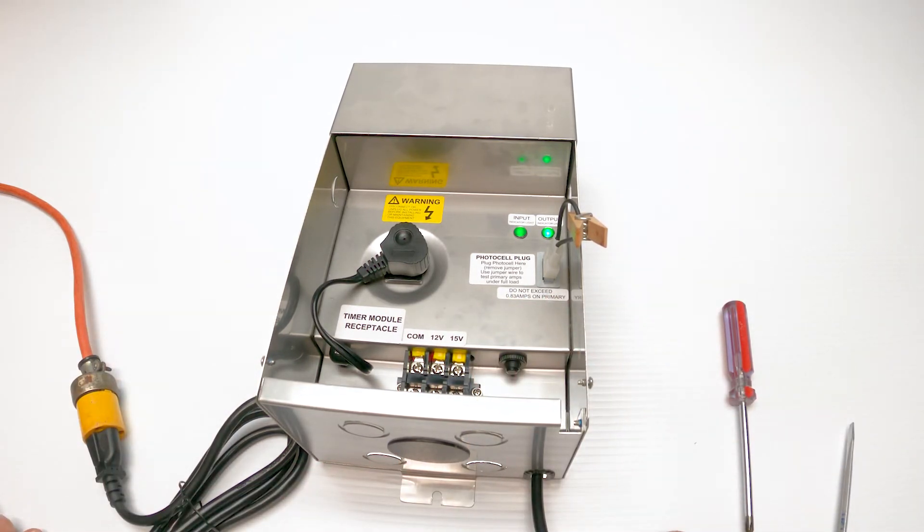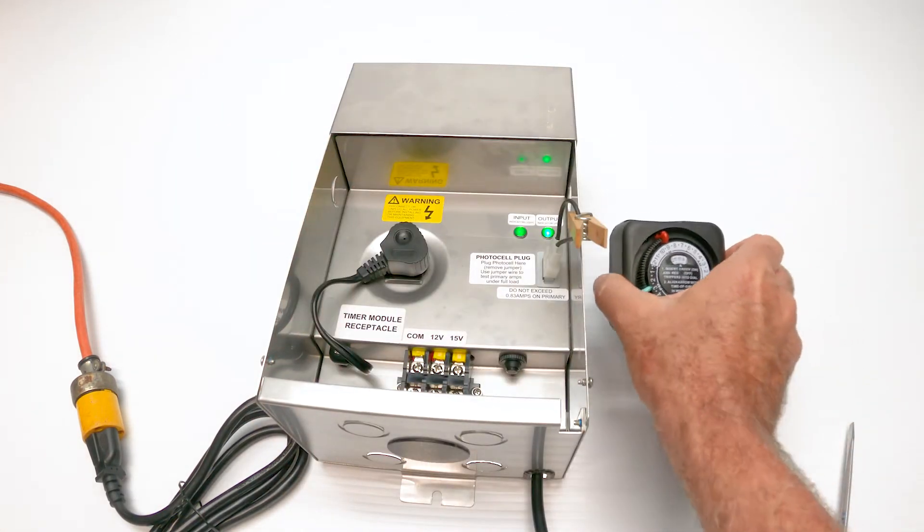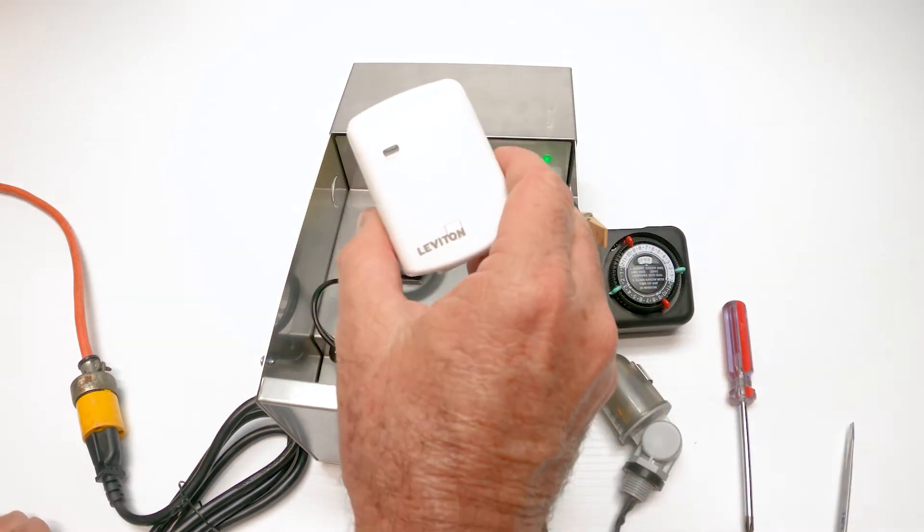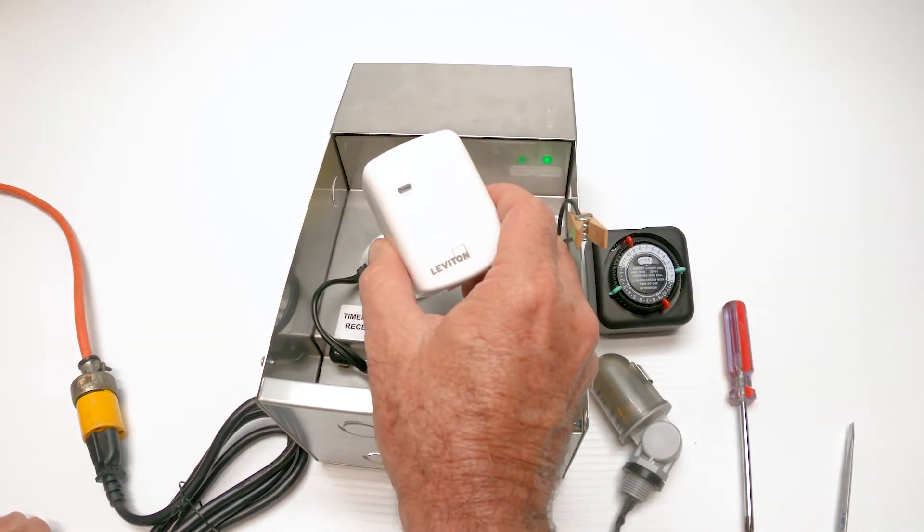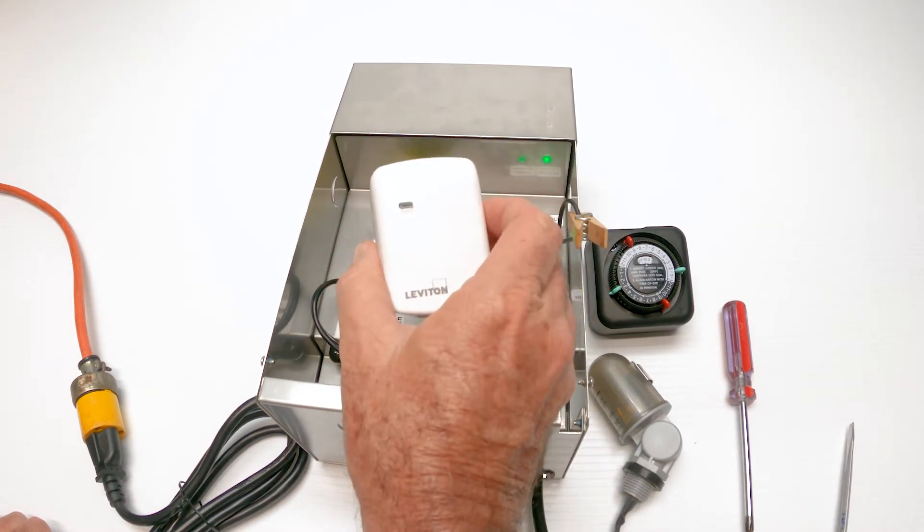What are the variables? They are as follows. There's a timer variable that can be plugged into the center. There's a photo cell that can be added. And there's a whole array of Wi-Fi devices that plug into this unit. For example, this one's made by Leviton and it also plugs into the socket.